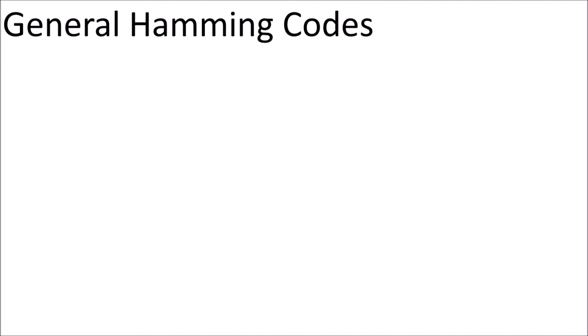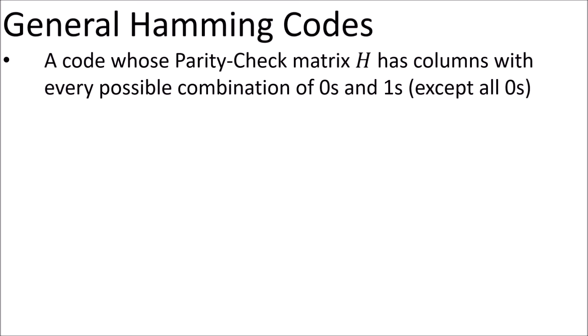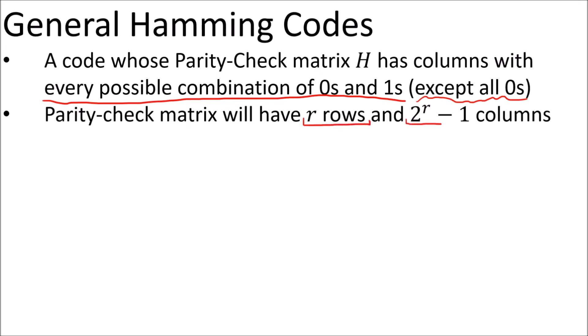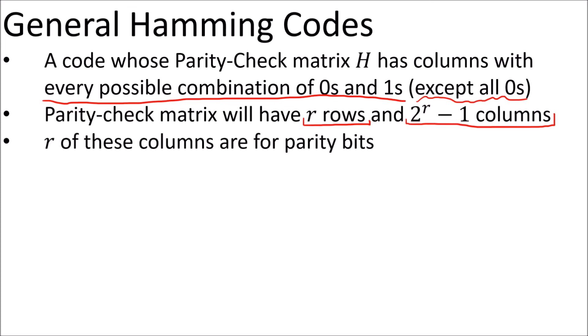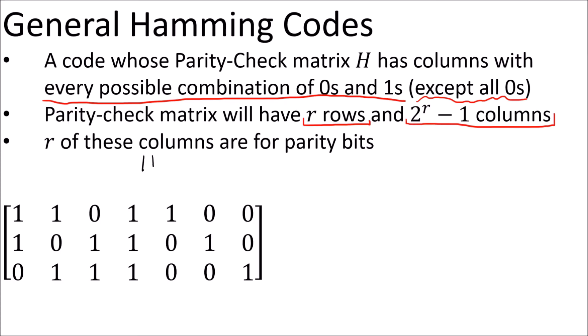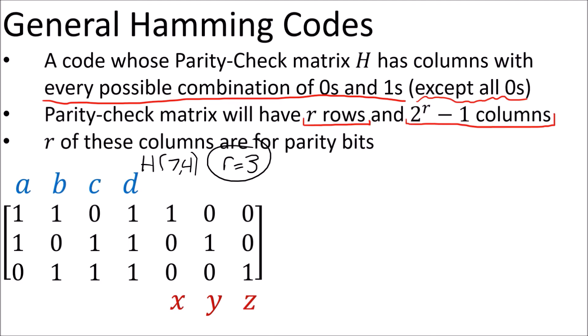The final topic is general Hamming codes. You've seen the Hamming 7-4 code, but in general, a Hamming code is any code whose parity check matrix H has columns with every possible combination of 1s and 0s, excluding the all-0 column. For a Hamming parity check matrix with R rows, the number of columns is always 2^R minus 1, since there are 2^R possible binary numbers with R digits and we remove the all-0 column. R of these columns represent parity check bits, and these are the columns with a single 1 inside. So for the Hamming 7-4 code, the R=3 case gives 8 minus 1 equals 7 columns, with 3 columns associated with the parity bits.